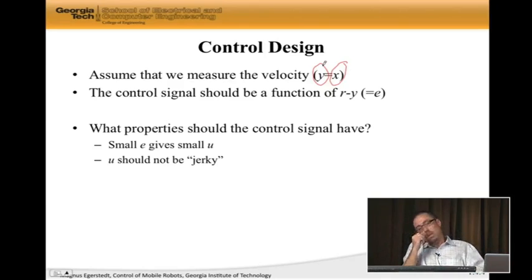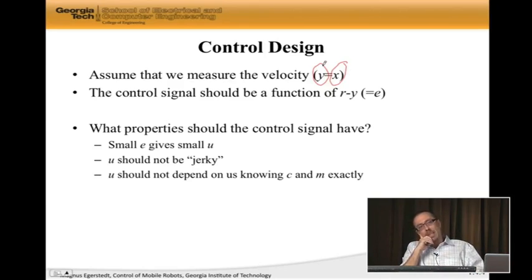And it should not depend on us knowing c and m. So m is the mass of the car, c is this semi-magical transmission coefficient. The mass of the car is changing depending on what luggage we have, it's changing depending on how many passengers we have. We should not have to redesign our controller just because a new person entered the car. We shouldn't have to weigh everyone and enter how much we weigh for it to work.